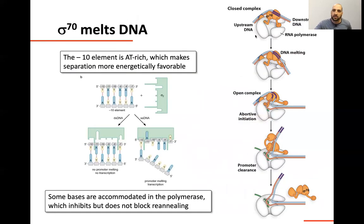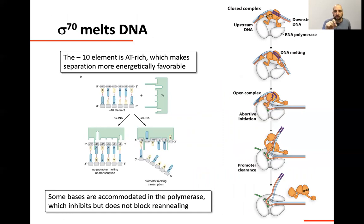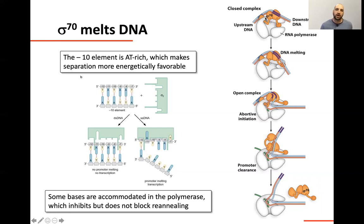Sigma 70 is important because it has two main jobs. The first job is that sigma 70 binds to the promoter and brings RNA polymerase in. The second job is that sigma 70 is involved in separating the strands — taking us from a closed complex to an open complex. There's also a third step: sigma has to get out of the way in order for the promoter to be cleared. The last step of initiation is moving that polymerase off of the promoter.